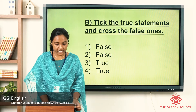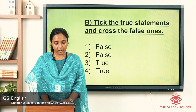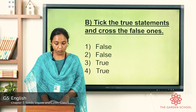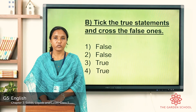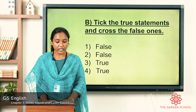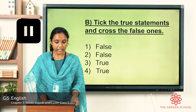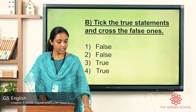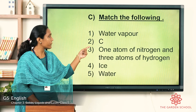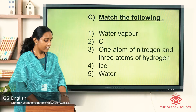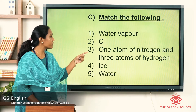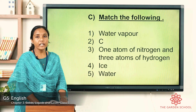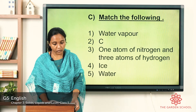Now let's see the third exercise — match the following. Options are given on the opposite side. Gas — is it sea, water vapor, ice, water, or one atom of nitrogen and three atoms of hydrogen? You can pause the video, match the following, and come back. The answers: gas is water vapor, carbon is sea, ammonia molecule is one atom of nitrogen and three atoms of hydrogen, solid is ice, and liquid is water.